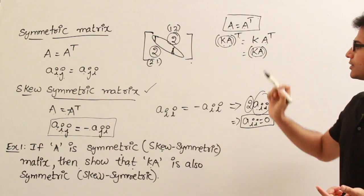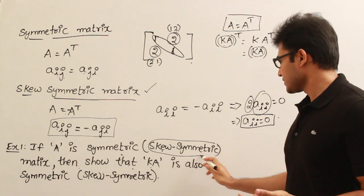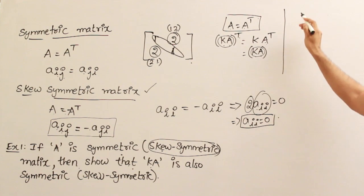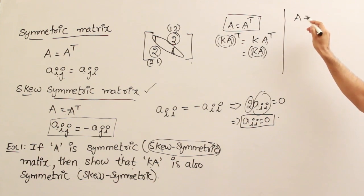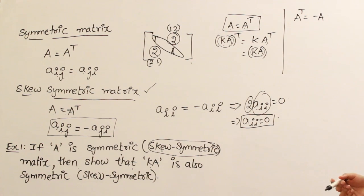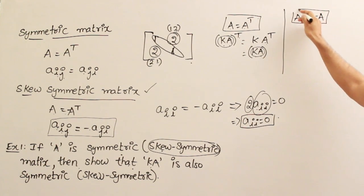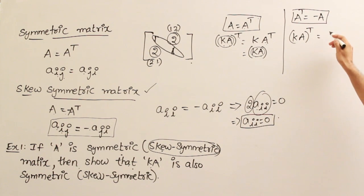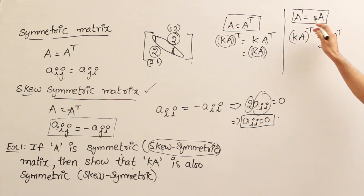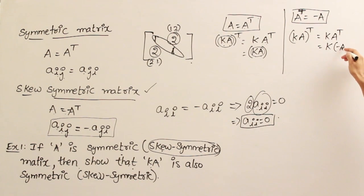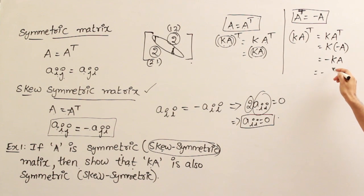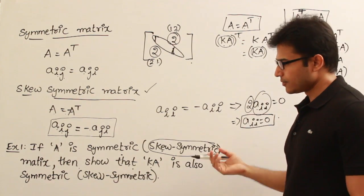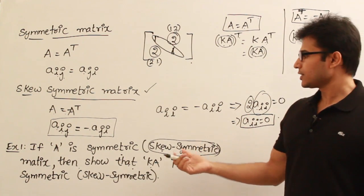Next, if A is skew-symmetric, show that KA is also skew-symmetric. If A is skew-symmetric, then Aᵀ equals minus A. We take (KA)ᵀ, which equals K times Aᵀ. Since Aᵀ equals minus A, this becomes K times minus A, which equals minus KA. Therefore, (KA)ᵀ equals minus KA, so KA is also skew-symmetric. In summary: if A is symmetric then KA is symmetric, and if A is skew-symmetric then KA is skew-symmetric.